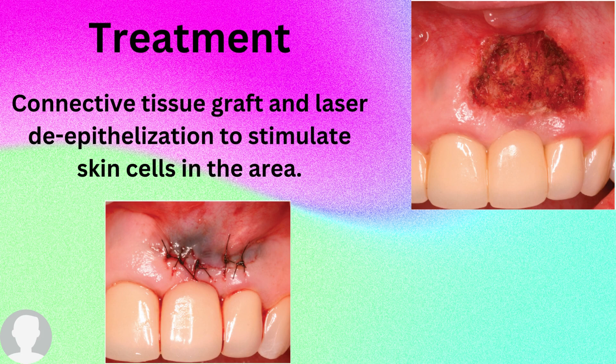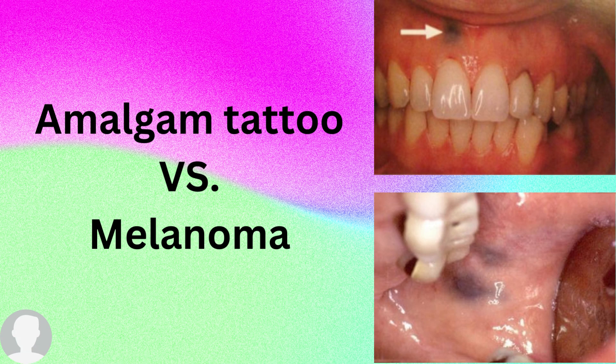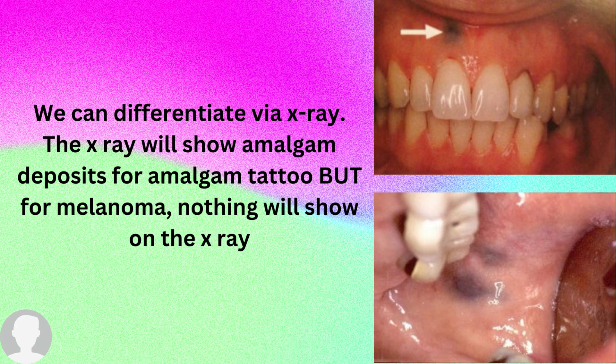The picture on the top is for amalgam tattoo and the picture below is for melanoma. You might ask: how can we differentiate between an amalgam tattoo and melanoma? We can differentiate by two ways — number one is via X-ray.